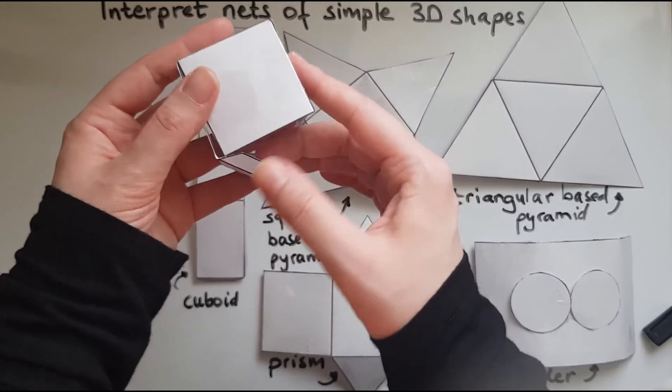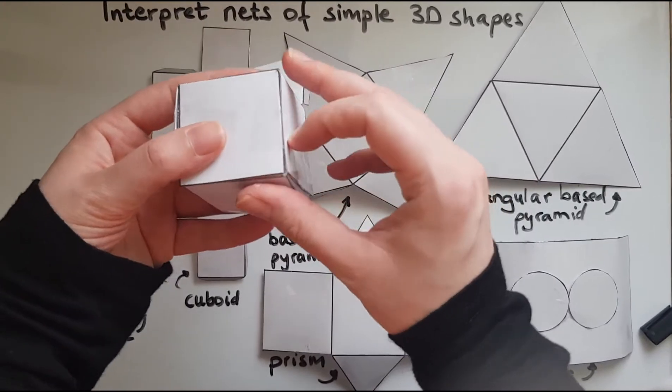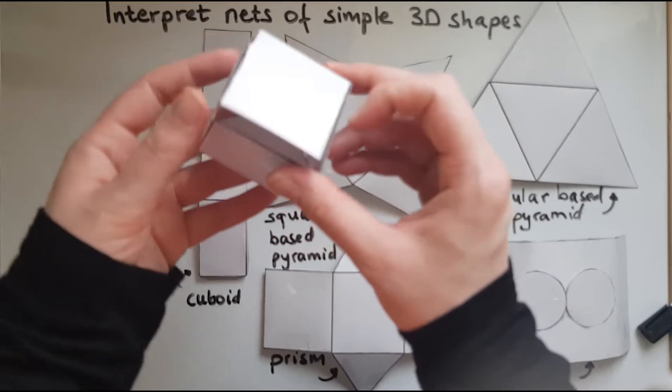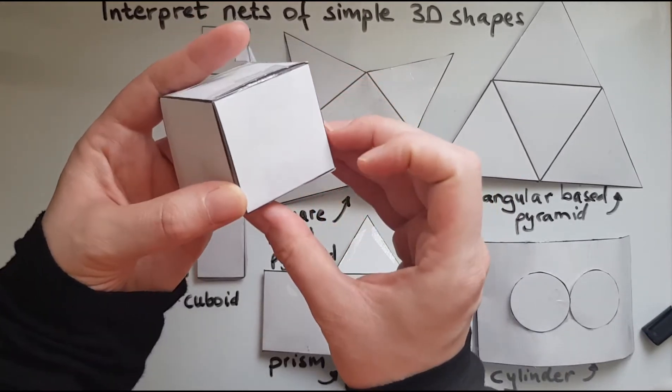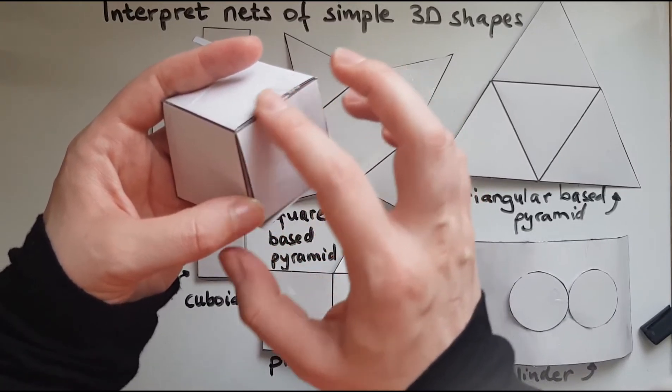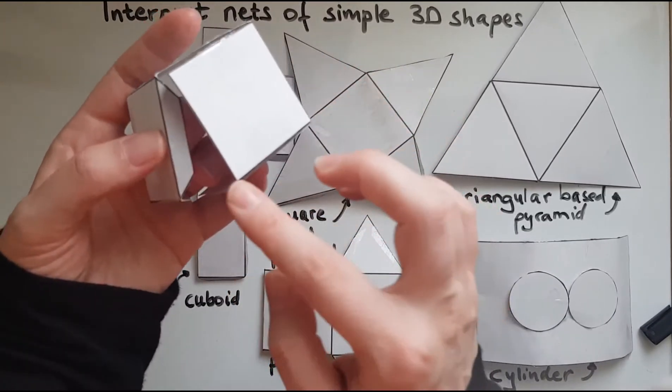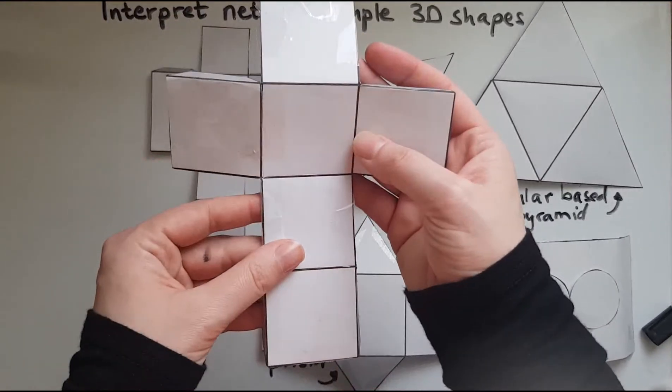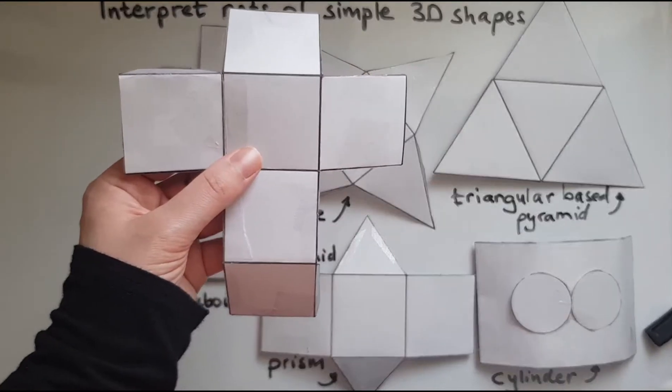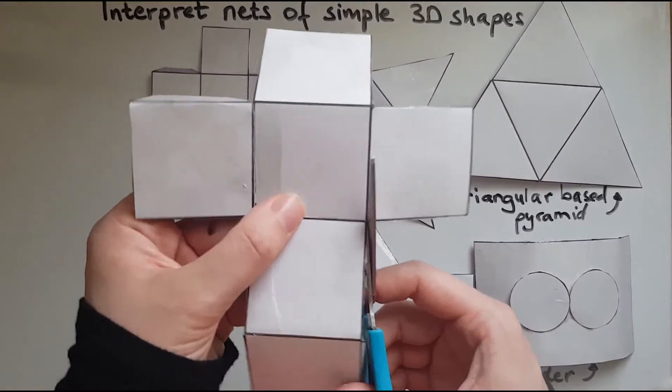It would become part of the cube. So it would not matter whether it was connected here or here or any of the four sides really. And if you want I can show you what that means as well.